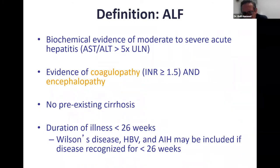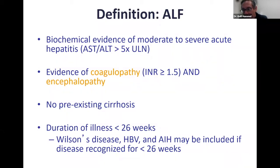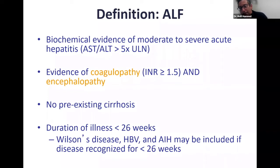There are a few exceptions to the rule of no pre-existing liver disease. We see Wilson's disease or patients with prior hepatitis B — meaning they had hepatitis B but it was not active, or they didn't know they had it and were given chemotherapy and immunosuppression — who can flare up. Although they had prior hepatitis B, the liver was otherwise fine, so they can be included in the definition.